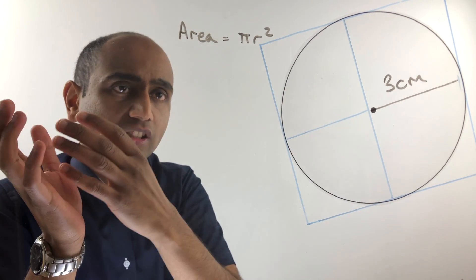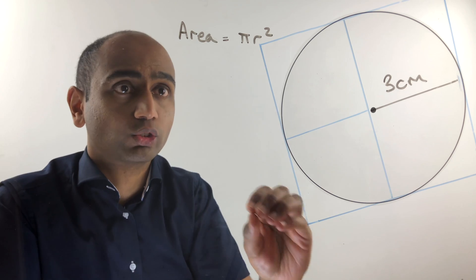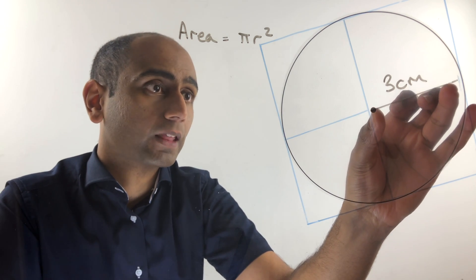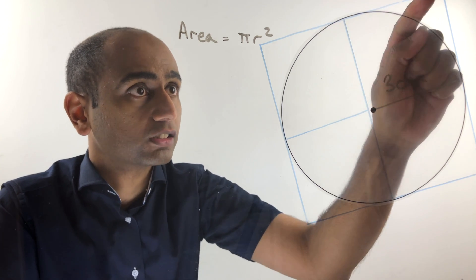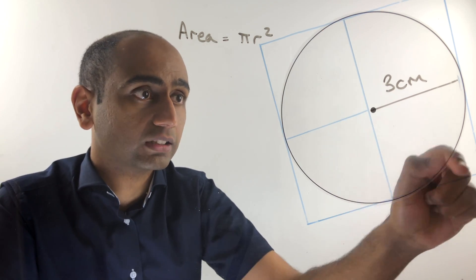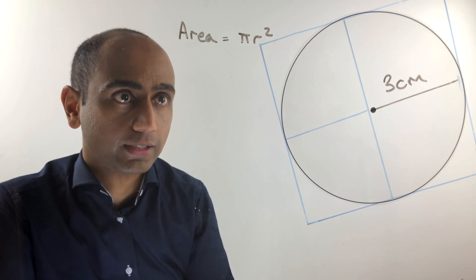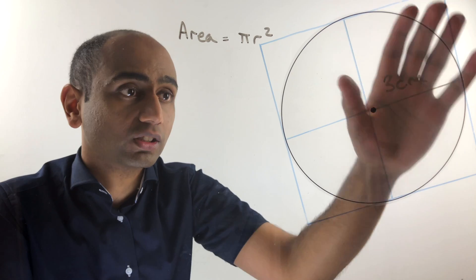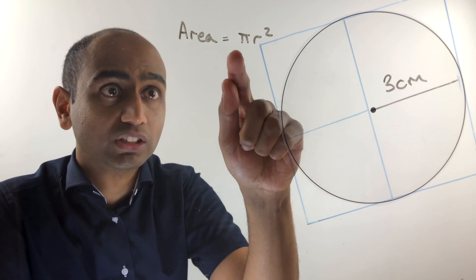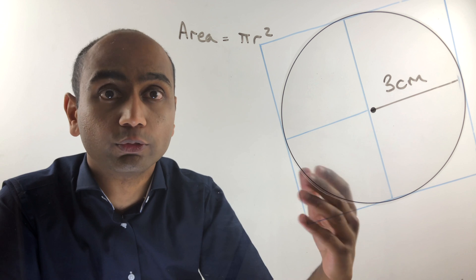Pi r squared came up with circumference in a previous lesson and now it's coming up with area. I won't prove why this is the correct formula, but I'll quickly illustrate why it looks reasonable. I've constructed four squares on this circle, each with an area of r squared, so the four squares together make a big square with area 4r squared. You can see that the circle almost covers that whole area but not quite — it's a bit less. The area turns out to be pi r squared, and since pi is about 3.14, it's a bit less than 4r squared.